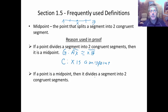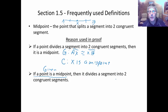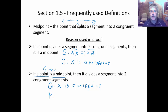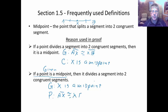Here's the converse: if a point is a midpoint, then it divides a segment into two congruent segments. So we must be given that something is a midpoint — say X is a midpoint — and then we can conclude that AX is congruent to BX. The 'if' part is always something already established; the 'then' part is what we're proving. Order matters.